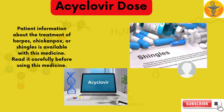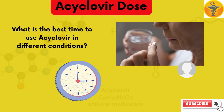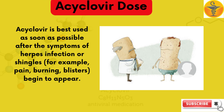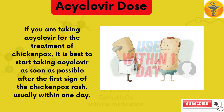Patient information about the treatment of herpes, chicken pox or shingles is available with this medicine. Read it carefully before using this medicine. Acyclovir is best used as soon as possible after the symptoms of herpes infection or shingles — for example pain, burning, blisters — begin to appear. If you are taking acyclovir for the treatment of chicken pox, it is best to start taking it as soon as possible after the first sign of chicken pox rash, usually within one day.